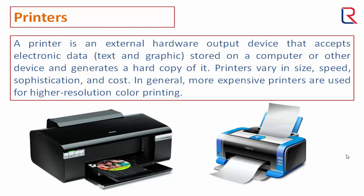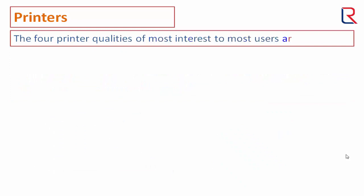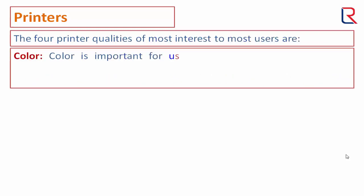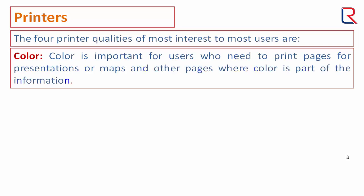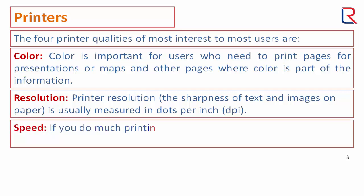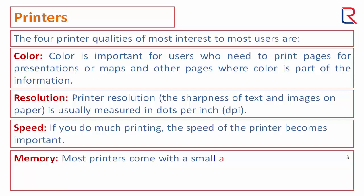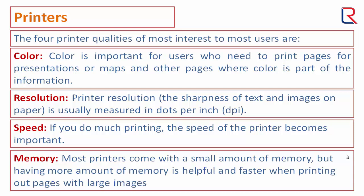The four printer qualities of most interest to most users are: color, which is important for users who need to print pages for presentations, maps, and other pages where color is part of the information; resolution, which is usually measured in dots per inch; speed, which becomes important if you do much printing; and memory, as most printers come with a small amount of memory but having more is helpful when printing pages with large images.